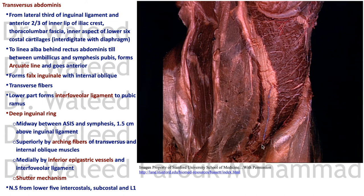Medially, the transversus abdominis also arches over the spermatic cord and together with the internal oblique forms the falx inguinalis, which inserts into the pubic crest. It also sends an extension of its lower fibers to the pubic ramus as the interfoveolar ligament, providing posterior support for the spermatic cord during its course in the inguinal canal.